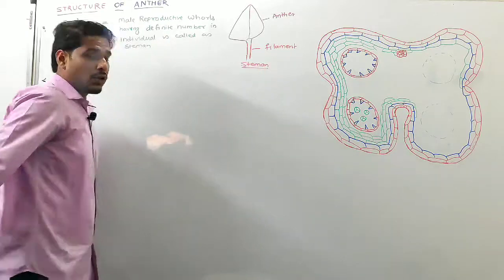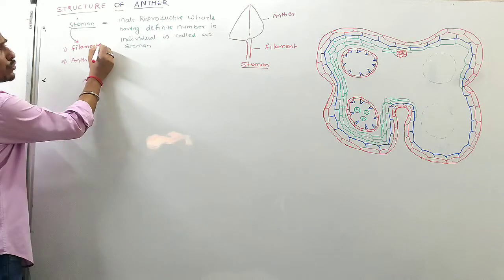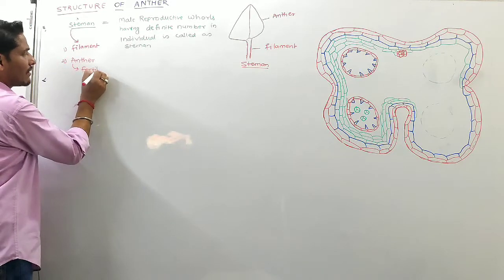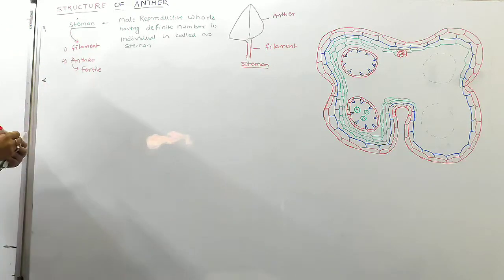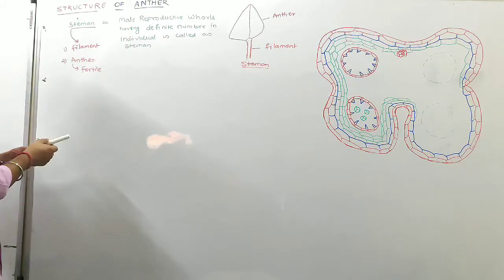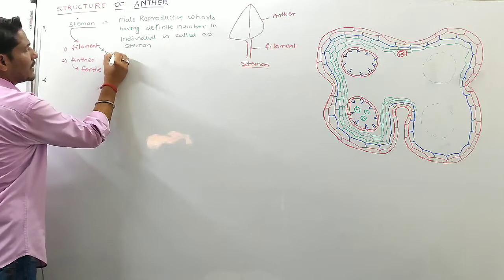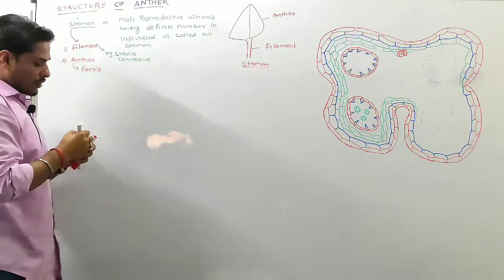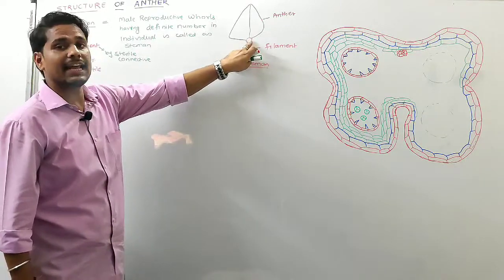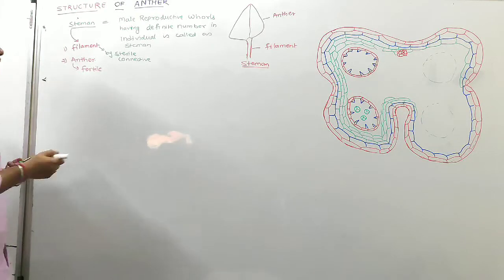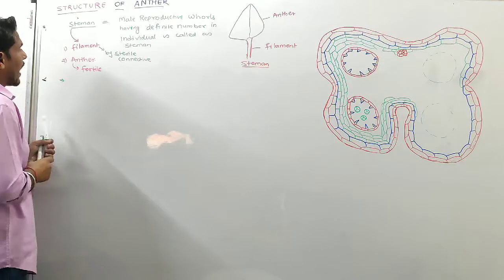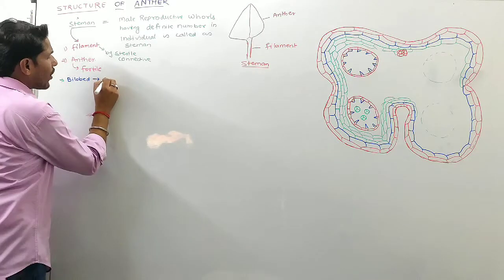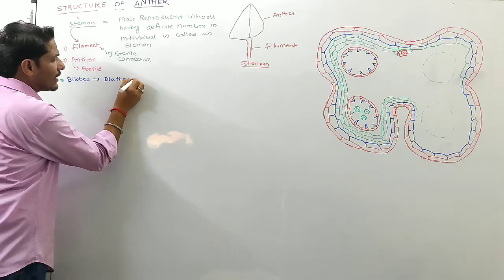Stamen is made of two parts: filament and anther. Anther is a fertile structure, whereas anther is attached to the filament by a sterile connective. Anther is bi-lobed, and this bi-lobed anther is called dithecous.